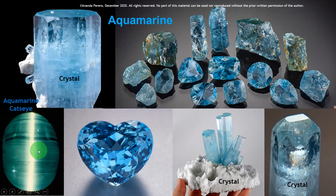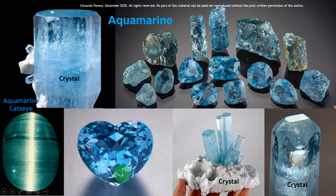You know the cat's eye and star effect from lesson 2. These are aquamarine rough and cut and polished stones. You can understand the color — sea water color. This is a crystal. Here you can see a crystal with the mother stone — three crystals crystallized against the mother stone. This is also a crystal, and this is a cut and polished aquamarine stone.